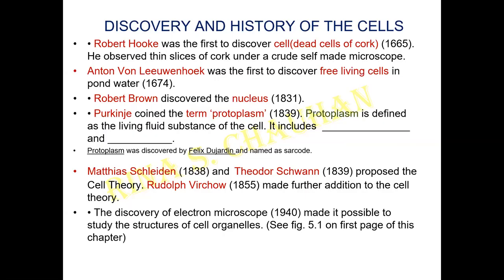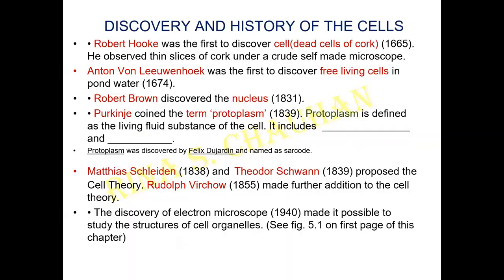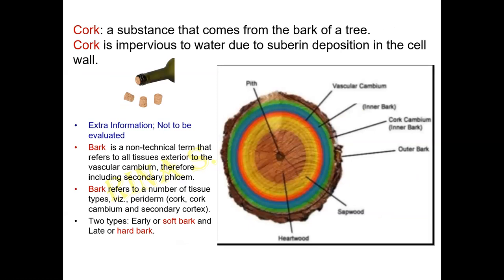Some children ask: what is cork? Cork is a part of the bark of the tree — a substance found in the bark. It is impervious to water due to suberin depositions in the cell wall, which is why it is also used as caps in some wine bottles and other alcohol bottles. The cork is everything which is outside the vascular cambium. You will be studying about the cambium and the cork in detail under the tissue chapter.